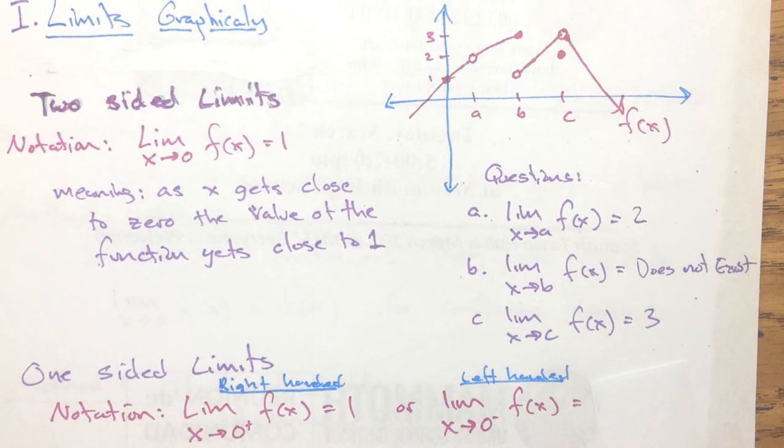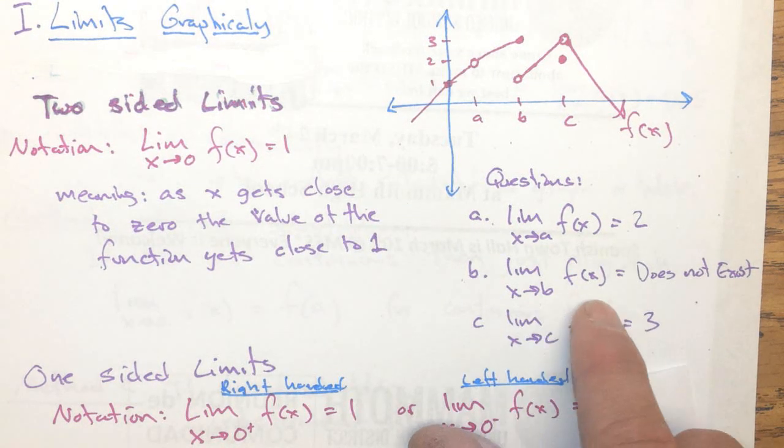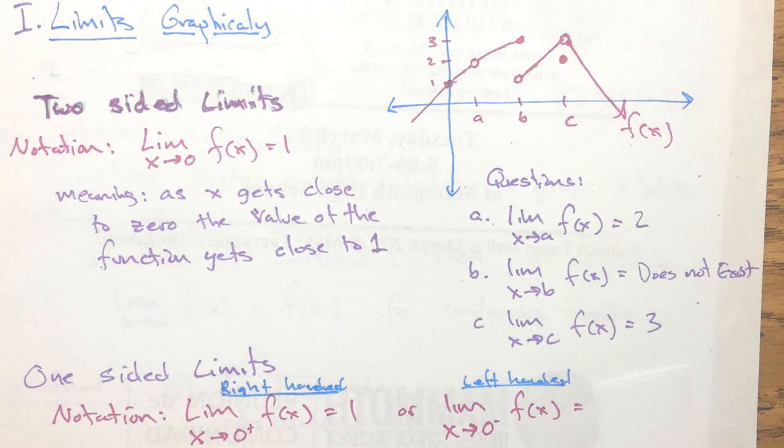A, the limit is two. And the limit as x approaches b doesn't exist. And the limit as x approaches c is three.